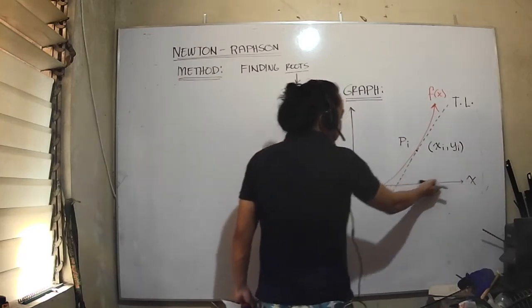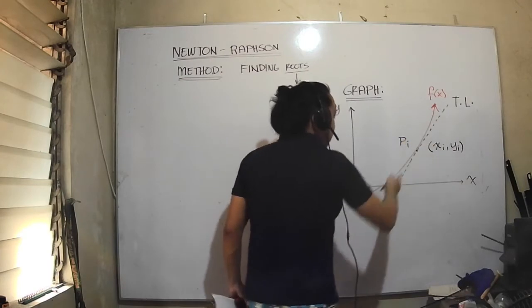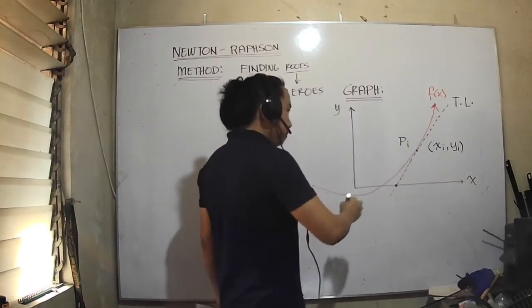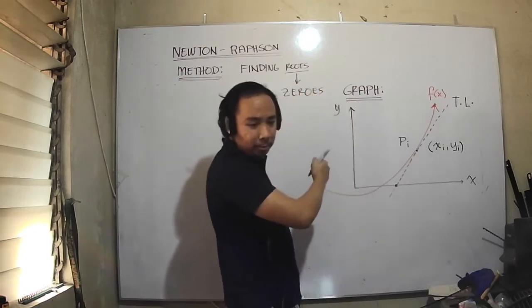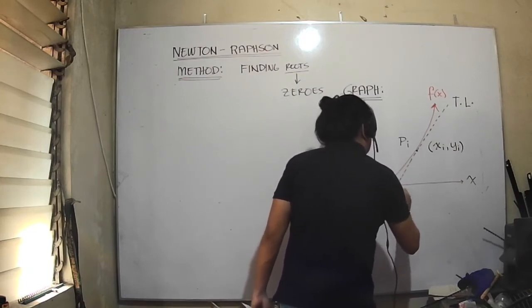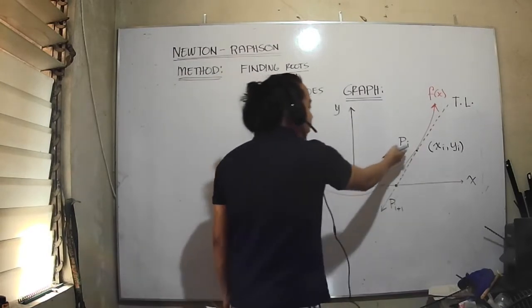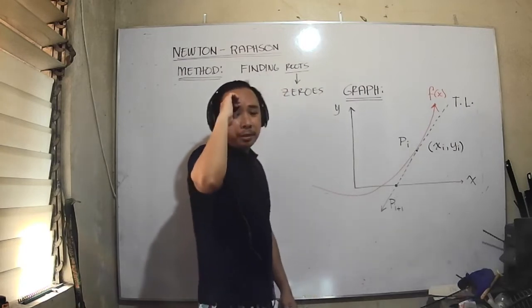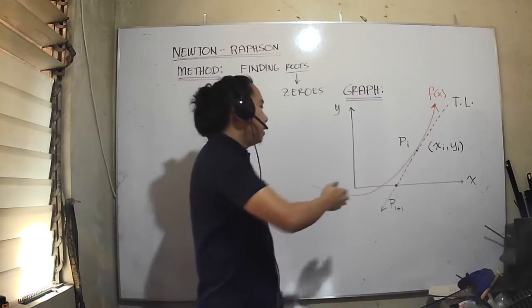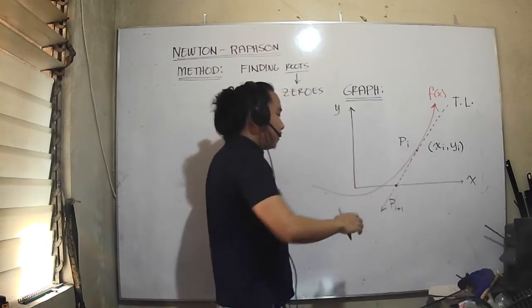This is the point Pi. We're talking about where the graph becomes zero. Now, let's talk about where the tangent line intersects the x-axis. This particular point I'll call P i+1. If this is point one, this is point two. This is one step further.